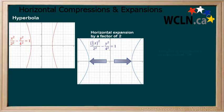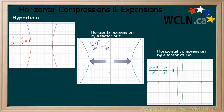Then, we will apply a horizontal compression to the original hyperbola by a factor of 1 fifth. We do this by multiplying x by 5, and we can see how the graph changes accordingly.